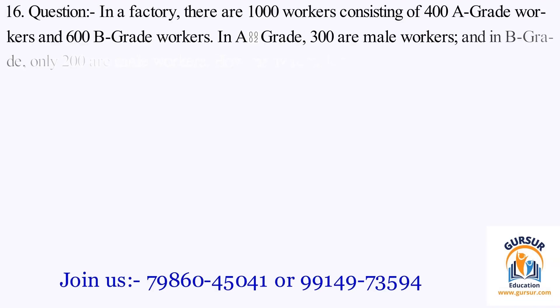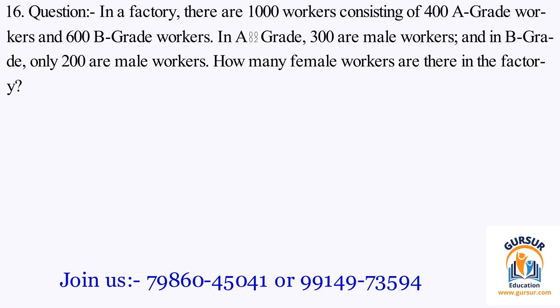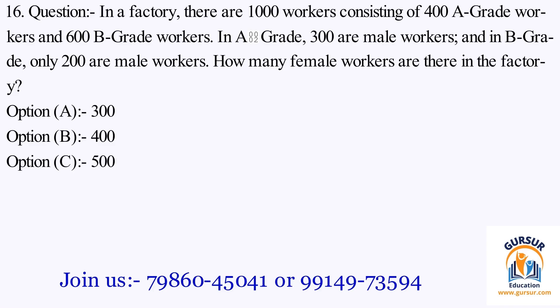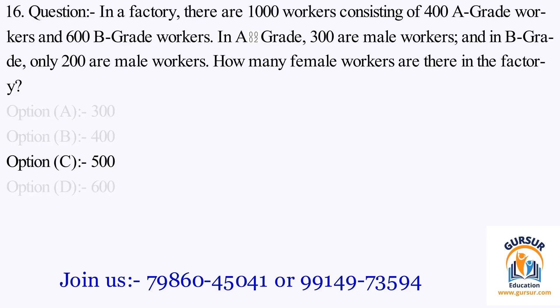Question number 16. In a factory, there are 1,000 workers consisting of 400 A grade workers and 600 B grade workers. In A grade, 300 are male workers. And in B grade, only 200 are male workers. How many female workers are there in the factory? Option A: 300. Option B: 400. Option C: 500. Option D: 600. The right answer is Option C, that is 500.